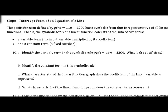Now we talk about slope-intercept form of the equation of a line: y = mx + b, where m is the slope and b is the y-intercept. Our profit function P(N) = 11N − 2200 has this symbolic form representing all linear functions — the sum of a variable term (input variable times its coefficient) and a constant term.